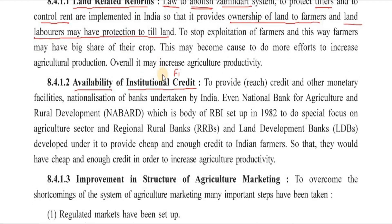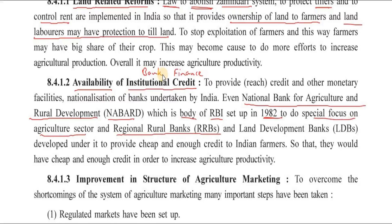The second measure is to make available institutional credit — that is, finance from banks, official finance. To save farmers from money lenders' exploitation, the National Bank for Agriculture and Rural Development, called NABARD, was set up in 1982. NABARD, which is a body of the Reserve Bank of India, has a special focus on the agricultural sector. Regional Rural Banks were set up, the government developed Land Development Banks, and their job is to provide cheap and adequate credit, meaning loans, to Indian farmers.